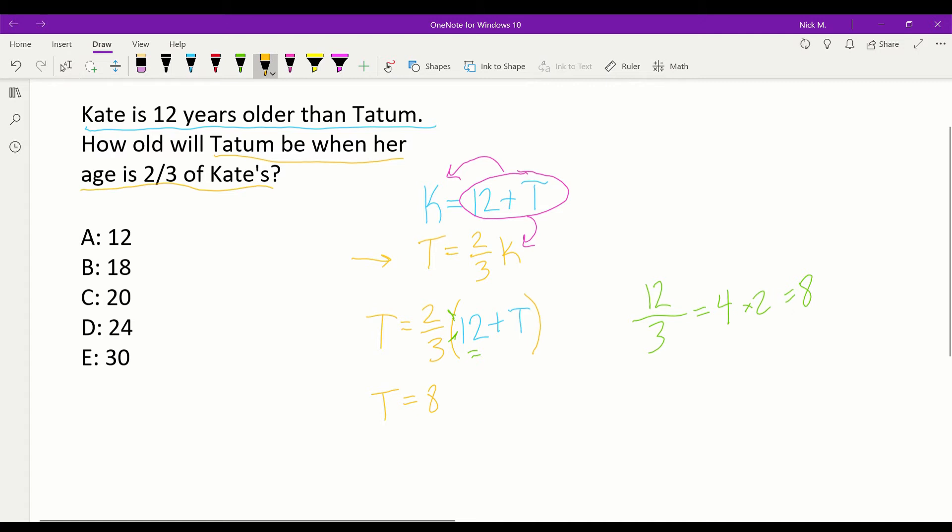But moving forward. So we have T equals eight, which is this two-thirds times 12. And then the two-thirds times T, that's plus two-thirds T. Okay. And then we simplify, bringing this T, subtracting two-thirds T from each side, or bringing the two-thirds T over, however you want to say that.